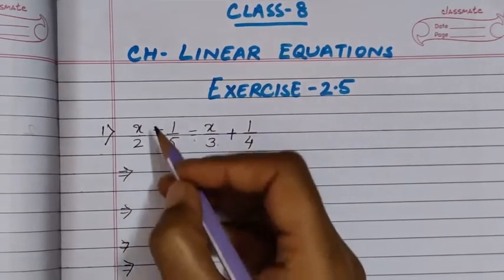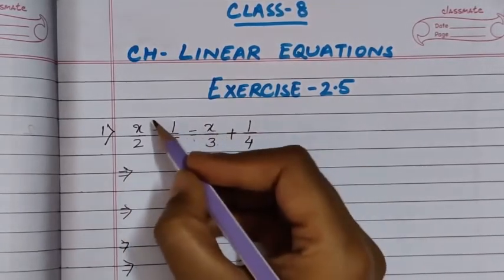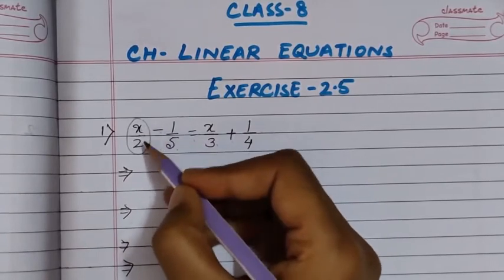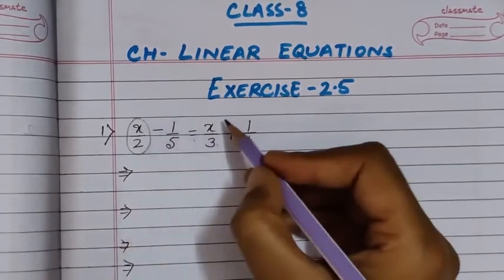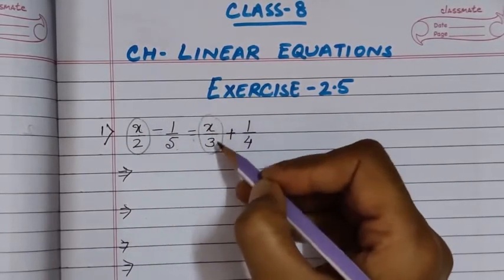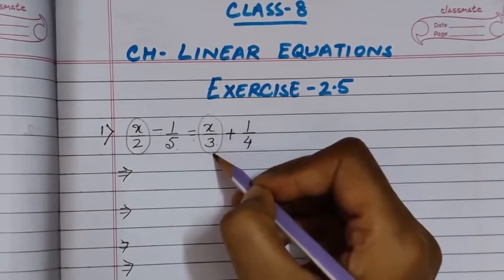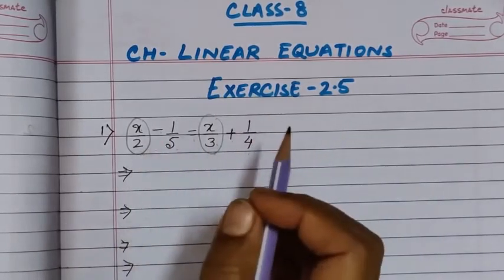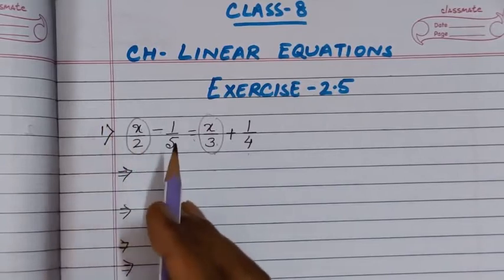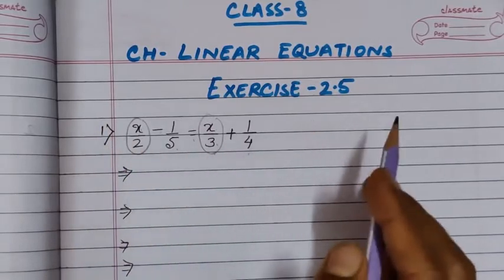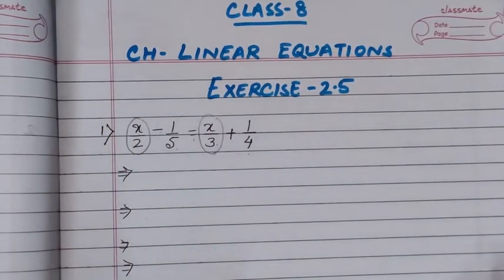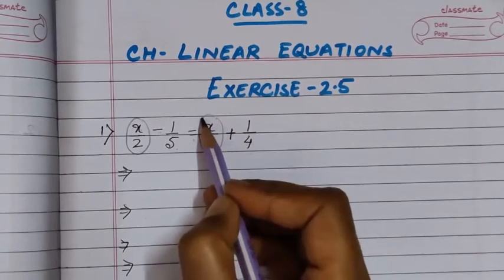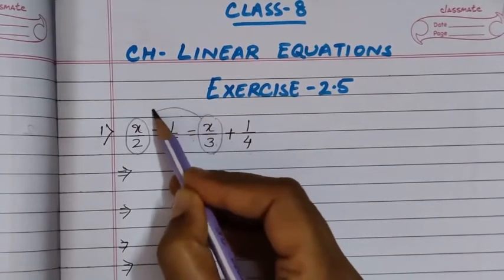You see here, we are having two variable terms: x by 2 and x by 3. So first we will keep the variable terms together and the constant terms together on one side. So first we will move x by 3 to LHS.